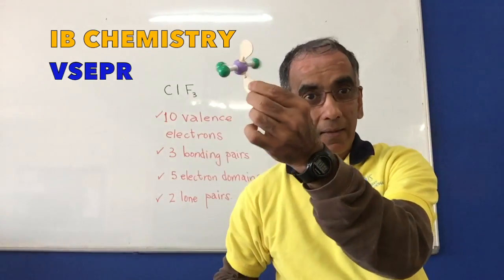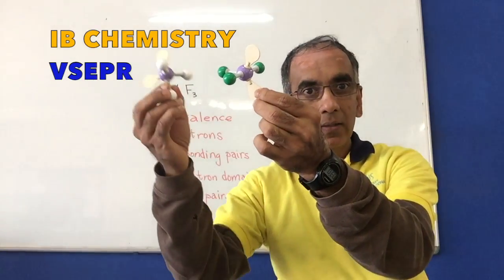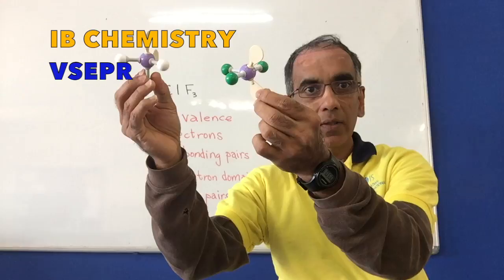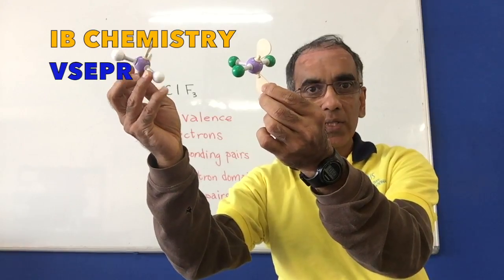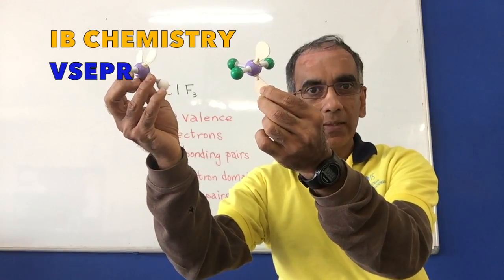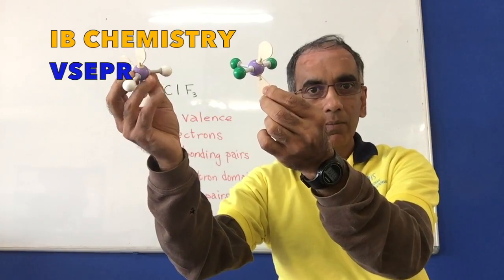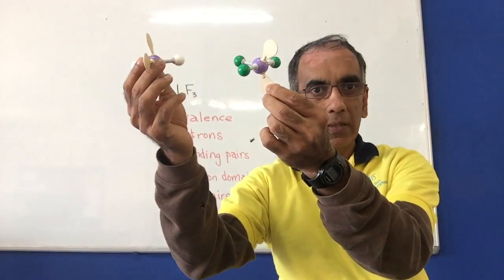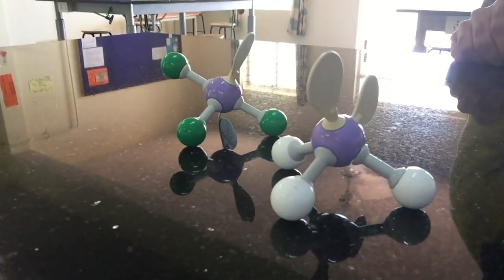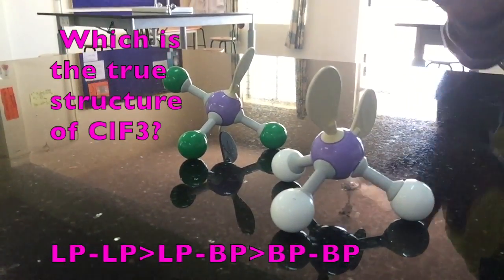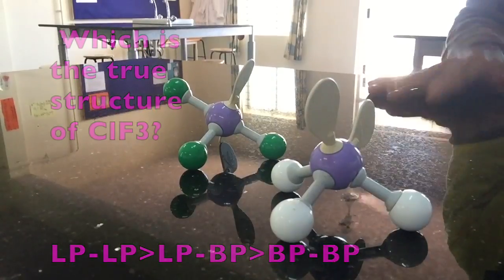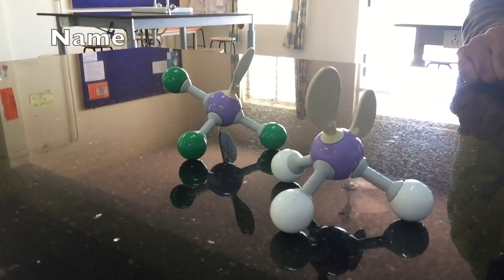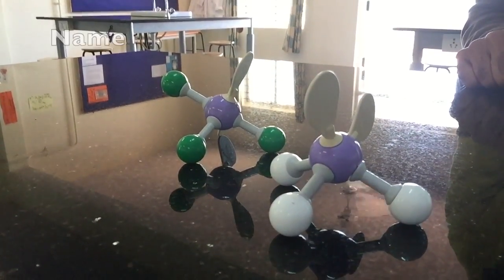While I have this structure in my hand, let's look at this other structure. Here the fluorines are represented with white, and here the fluorines are represented with green. Consider which of these 2 is the more likely for the actual structure of chlorine trifluoride.